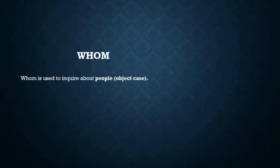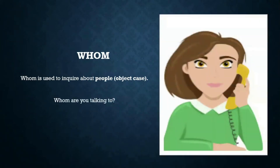Whom. Whom is used to inquire about people, but it is only used in an object case. Now, if you are wondering what an object case is, you need to refer to our Chapter 1 — The Sentence — where we have explained the difference between subject and object. You can find the link in the description area. Whom are you talking to? Whom will you meet tomorrow?